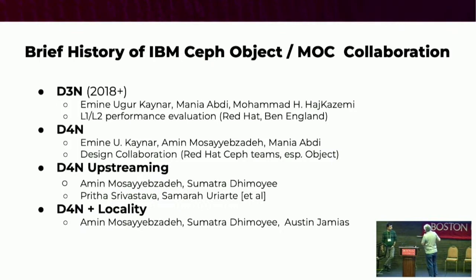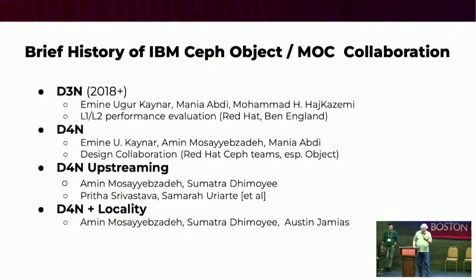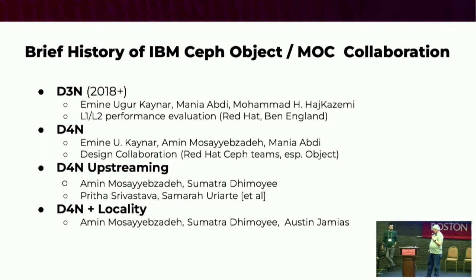D4N is an intermediate materialized cache for S3 object data, and its purpose is largely to accelerate computation in large data lakes. It's gone through a number of different dimensions. The original D3N is a more static topology for such a cache. D4N added a distributed directory, allowing more sophisticated things, and it's the foundation for everything we're talking about here.